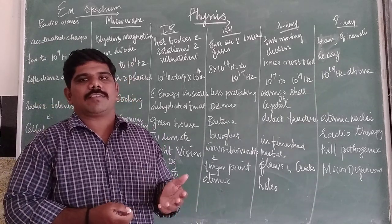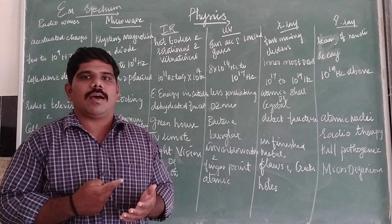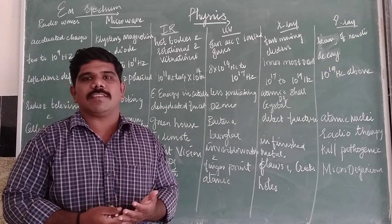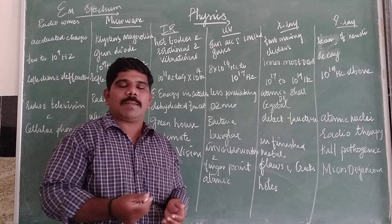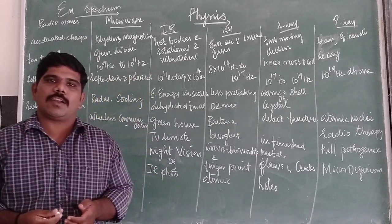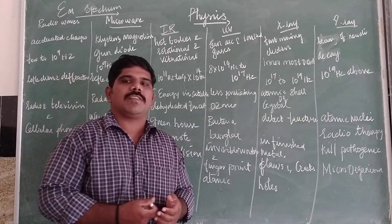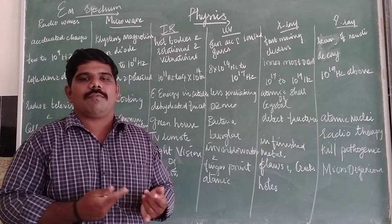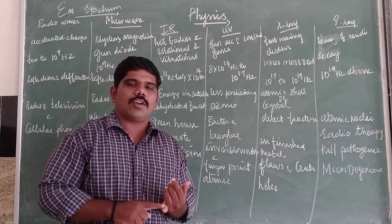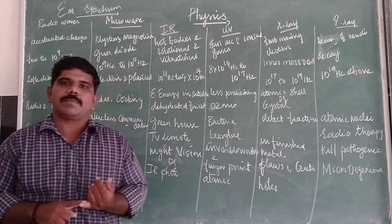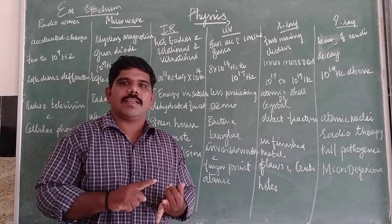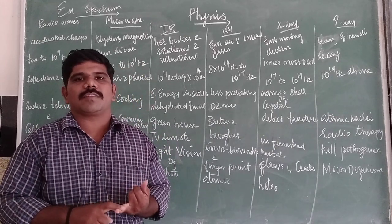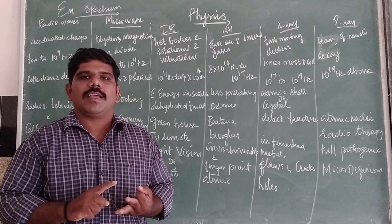Maxwell's prediction was experimentally verified. We also saw the 8 properties of electromagnetic waves. First, electromagnetic waves are produced by any accelerated charges. Then they do not require any medium for propagation, so they are called non-mechanical waves.